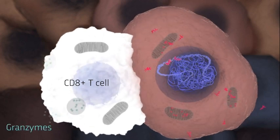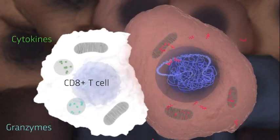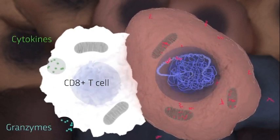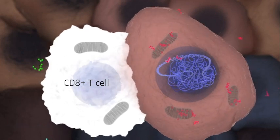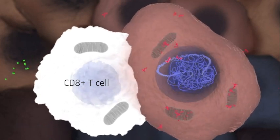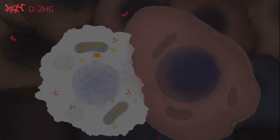Normally, these T cells produce and release cytokines and granzymes, which are molecules that kill cancer cells. We found that the T cells sense and take up D2HG produced by cancer cells.